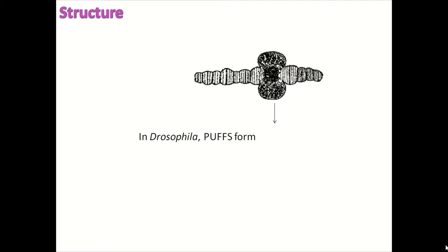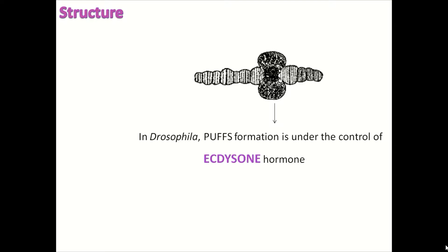In Drosophila melanogaster, puff formation is under the control of a hormone called ecdysone. This hormone is a steroid hormone that controls molting in insects and other arthropods. So puff formation in Drosophila is regulated by ecdysone hormone wherever it is present in the puff region.